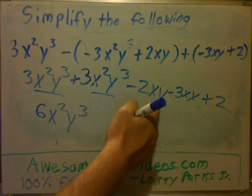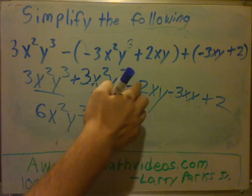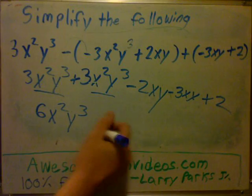Okay, here I have -2xy and -3xy. I have minus two of those, minus three of those, and -5xy.